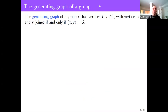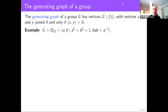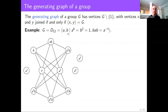Throughout the talk, G will denote a group that could be finite or infinite in general. The generating graph of G has vertices the non-identity elements of G, with two vertices joined by an edge if and only if they generate the group. Let's look at the example where G is the dihedral group of order 12, the group of symmetries of a regular hexagon generated by two elements A of order 6 and B of order 2. Here is the generating graph of D12.